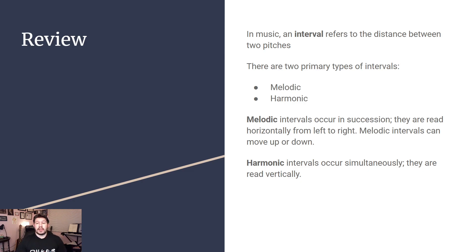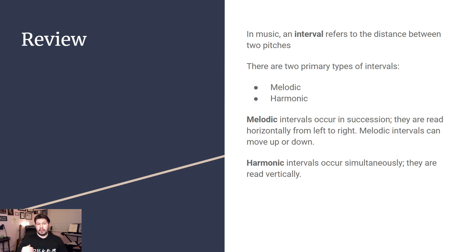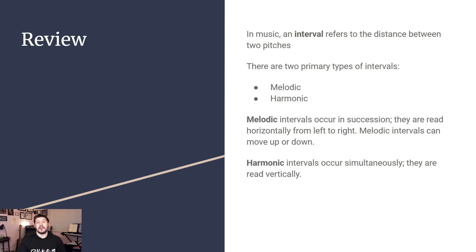A melodic interval is going to occur in succession, meaning that they come one after another and they are read horizontally going from left to right. Melodic intervals are typically going to be moving up or down — sometimes we'll say a fifth above or a third below, various different things like that.